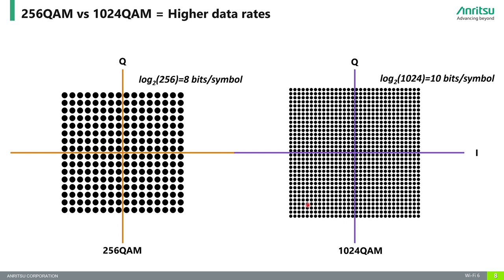The last highlighted feature is subcarrier modulation. AX uses 1024 QAM compared to 256 QAM in AC. With 1024 QAM we have 1024 points in amplitude and phase, which translates into 10 bits per symbol, whereas 256 QAM maps only 8 bits per symbol. So we can transmit 2 additional bits per electrical signal compared to the previous modulation.